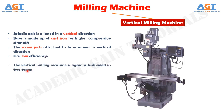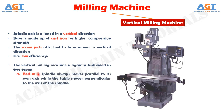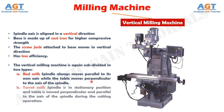The vertical milling machine is subdivided into two types. Number one: bed mill. In bed mills, the spindle always moves parallel to its own axis while the table moves perpendicular to the axis of the spindle. Number two: turret mill. In turret mills, the spindle is in a stationary position and the table is moved so that it is always perpendicular and parallel to the axis of the spindle during the cutting operation.